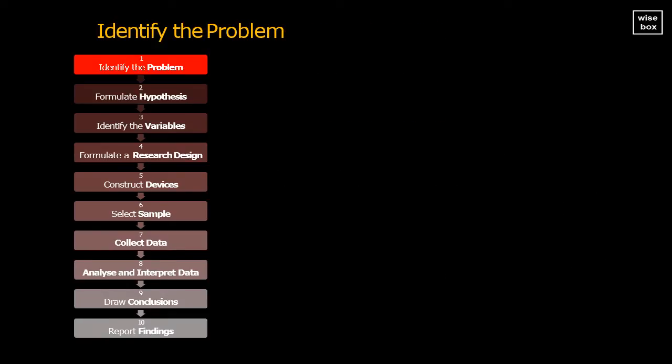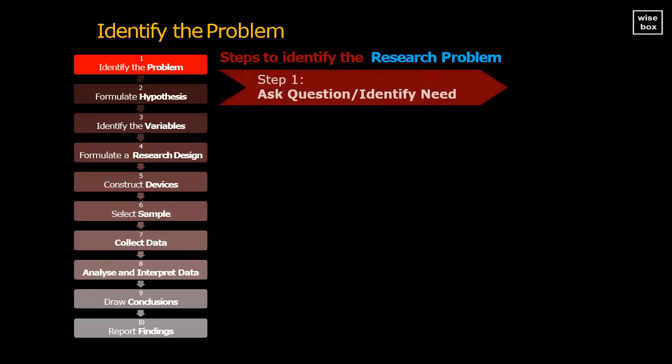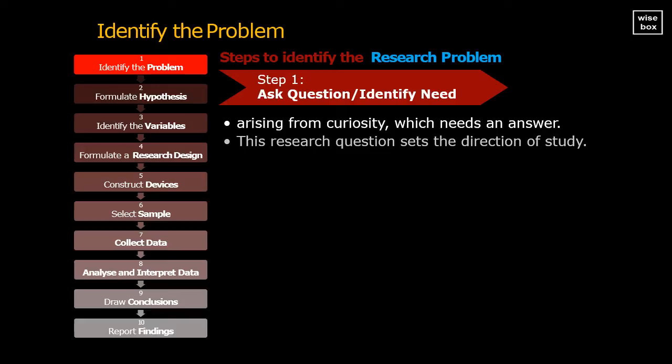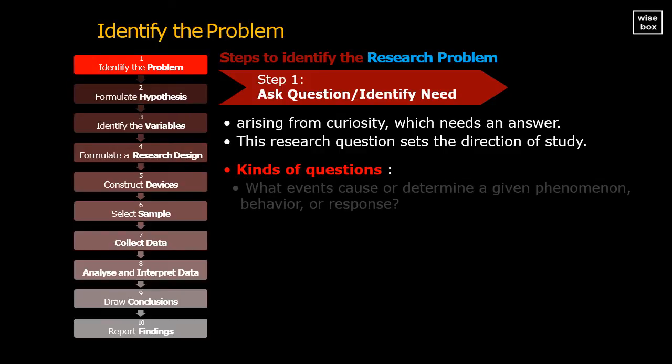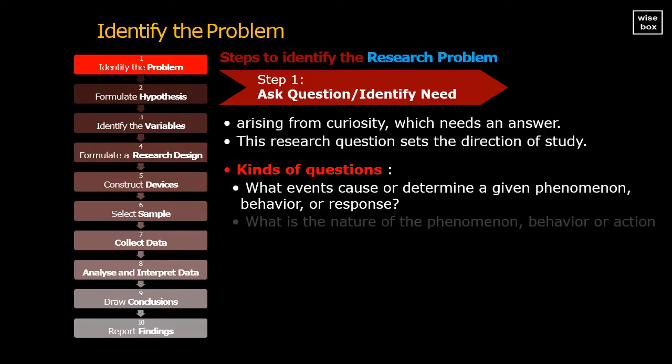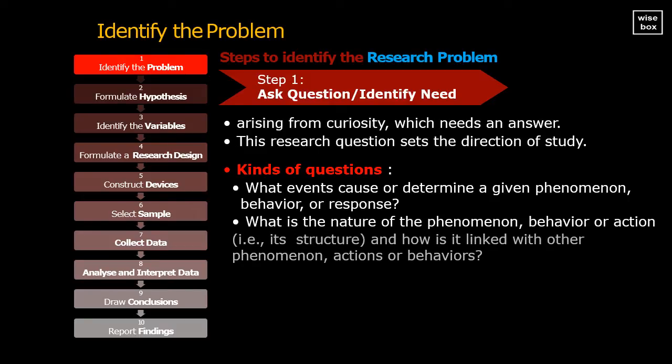The first step in the research process is identifying the problem. To identify the research problem, first, we need to ask a question or identify a need arising from our curiosity and that which needs an answer. This research question sets the direction of study. Here are the kinds of questions we may ask: What events cause or determine a given phenomenon, behavior, or response? What is the nature of the phenomenon, behavior, or action, that is, its structure, and how is it linked with other phenomenon, actions, or behaviors?